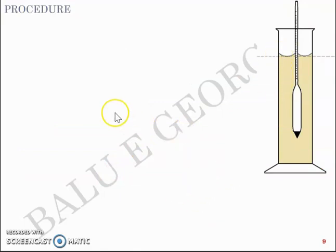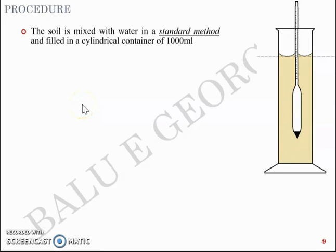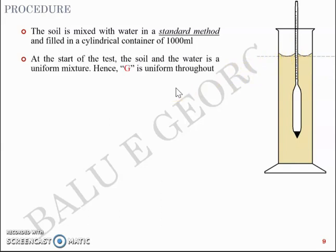The procedure is quite simple. You have to take the soil which is passing through the 75 micron size and it is mixed with water in a standard method and is filled in a cylindrical container. I have a cylindrical container which has a marked capacity of one liter. Subsequently at the start of the test the soil and water will be of a uniform mixture.